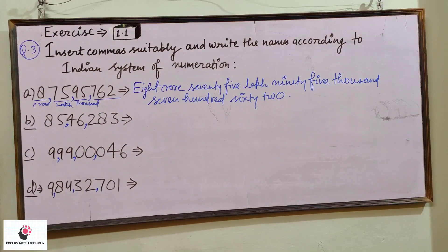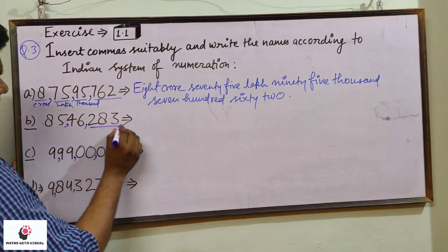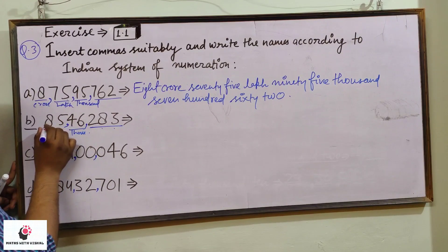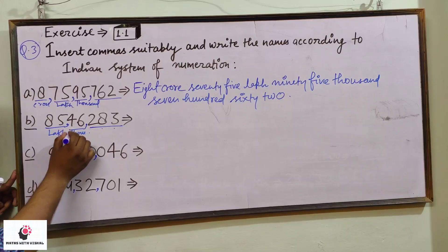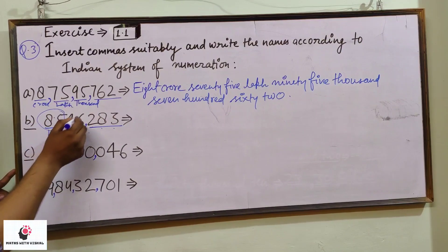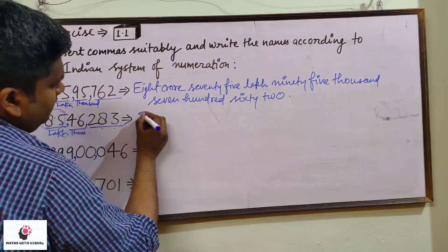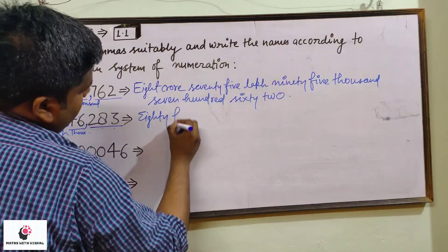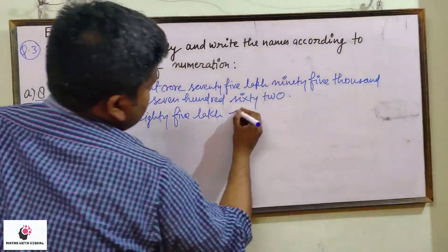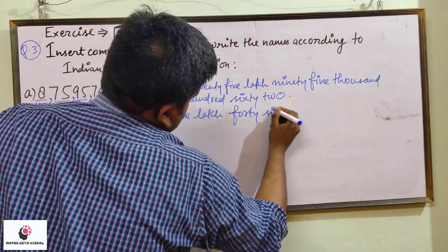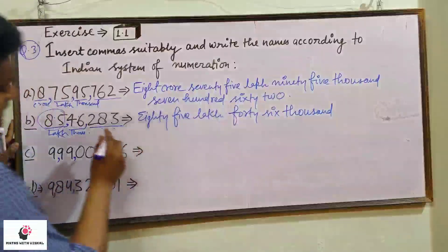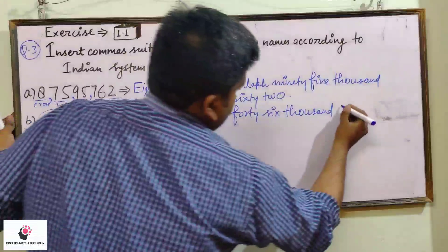Now let us move to the second number. Ones, hundreds — that is say — thousands, ten thousands — so this is thousands — and this is lakh. There is no crore this time. So: 85 lakh, 46,000, and then last, 283. So: 85 lakh, 46,000, and 283.